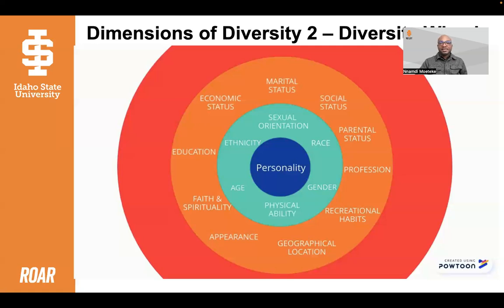Hispanic and Latinx is an example of an ethnicity rather than a race, because one can be racially white but also be ethnically Hispanic or Latinx. The same goes for identities such as the difference between Black and African American. One's race may be Black, but one's ethnicity may be African American, Caribbean, or one of the various ethnic groups of Africa.